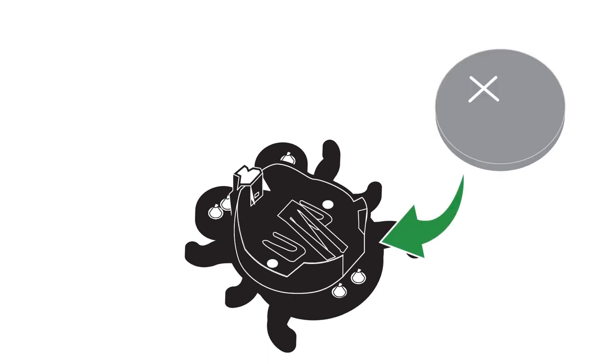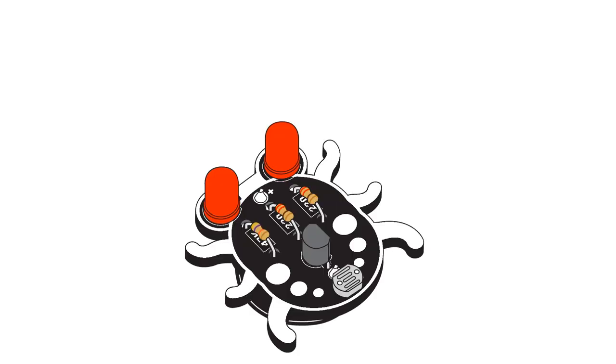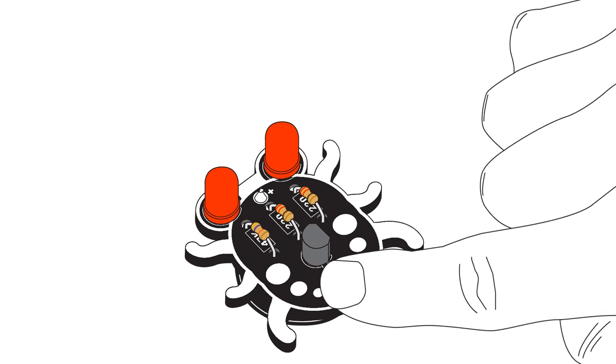Then all you've got to do is put the 20mm coin cell battery into the battery holder, and you put it in positive side up. If you're in a dark room, the light should light up, and if not, then put your finger over the sensor, and that should make it dark enough for your LEDs to light up. You can see the light.